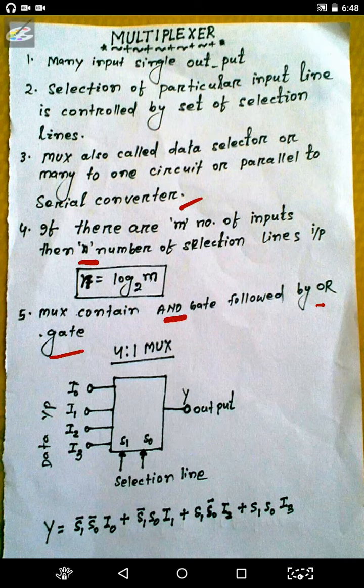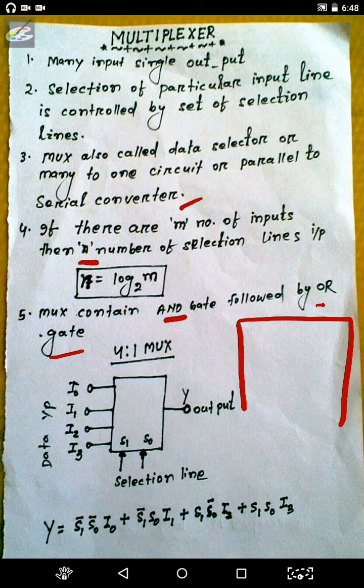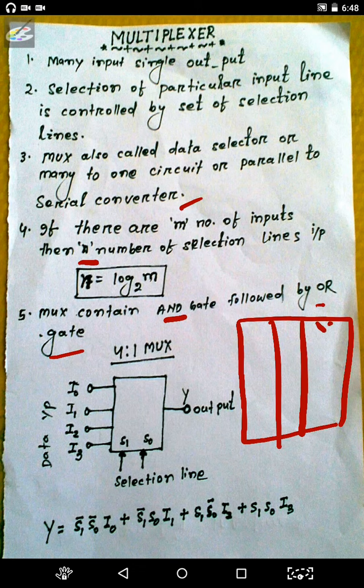For example, consider a 4-to-1 MUX in which 4 input lines are given to the MUX, 2 selection lines S1 and S0, and 1 single output line. The truth table for this MUX is as follows.